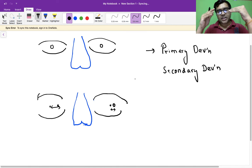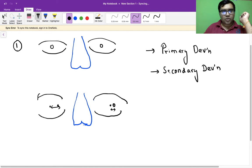In incomitant squint, the amount of deviation of the muscles is different in different cases. I would restrict my discussion today on the paralytic squint. So let's say this is our normal eye which I have pointed to figure A. Here let's say this is my right eye and this is my left eye.